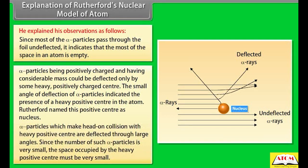3. Alpha particles which make head-on collision with the heavy positive center are deflected through large angles. Since the number of such alpha particles is very small, the space occupied by the heavy positive center must be very small.